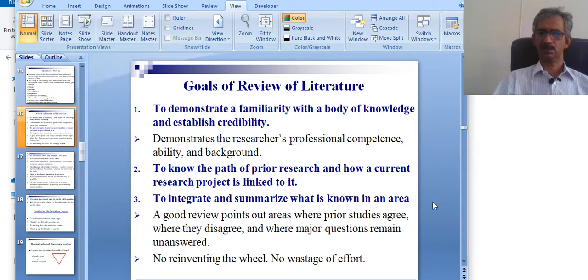To integrate and summarize what is known in an area, we interlink or connect the past literature and summarize it. A good review points out areas where prior studies agree, where they disagree, and where major questions remain unanswered.